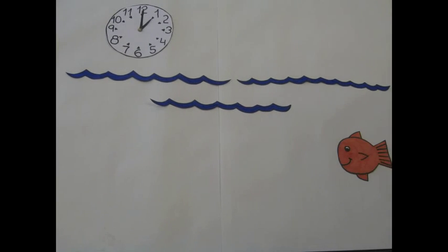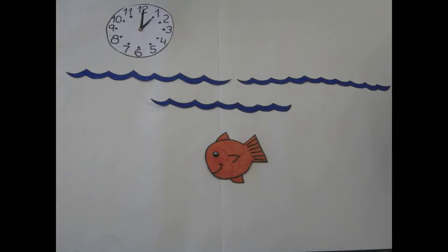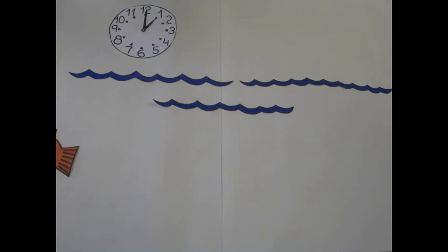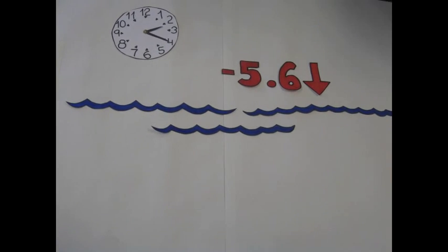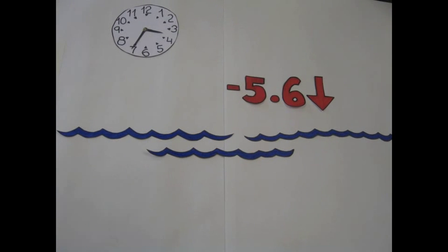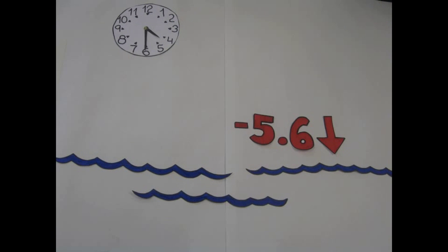Here is a problem involving rational numbers. At a seaport, the effect of the tide changed the water level by negative 5.6 meters in 3.5 hours. To find the mean change in the water level, we must divide negative 5.6 by 3.5.